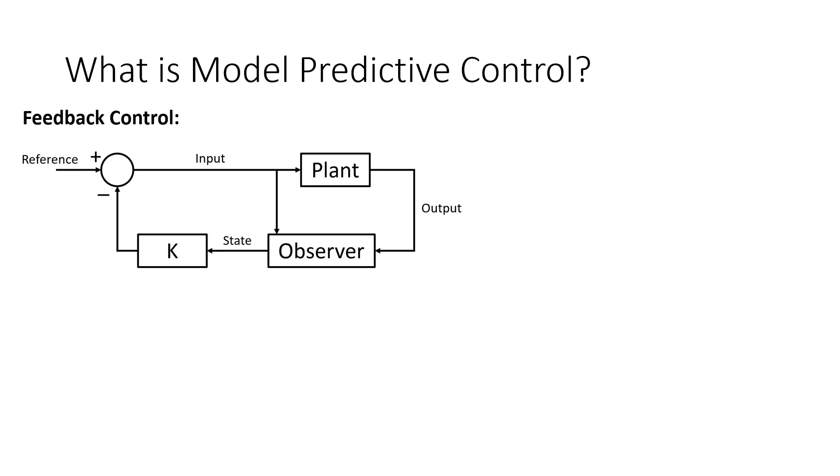In class, we have most recently learned about how to implement feedback control. In this type of control, the plant receives an input and produces an output. The output is measured and then an observer estimates the current state of the system. A feedback gain is then applied to this state, which produces an input that is then fed back into the plant.